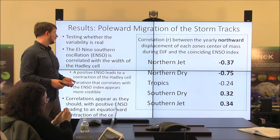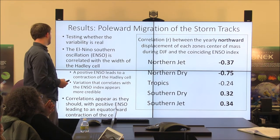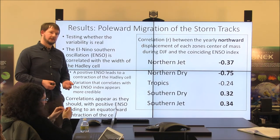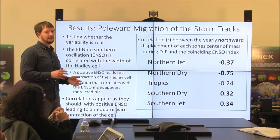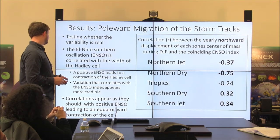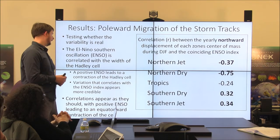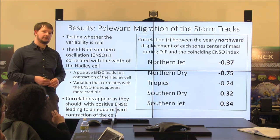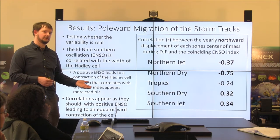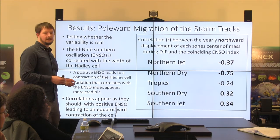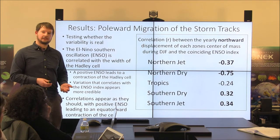To validate that this variability was real, we compared it with the El Niño index, because when El Niño is strong and positive it contracts the Hadley cell — several papers show that. We correlated the northward displacement of each zone with the Niño 3.1 ENSO index and saw the correlations we would expect, adding a lot of credence to the variability in the time series. When ENSO was high, the northern jet stream tends to descend a little toward the equator while the southern jet moves northward. We felt pretty good about that result after seeing they correlate pretty well.